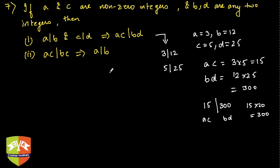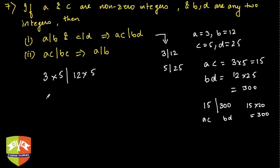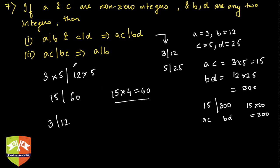For property 7.2, let's use the same example. ac is 15 and bc is 12 times 5, which is 60. So 3 times 5 divides 12 times 5 — that is, 15 divides 60 — because 15 times 4 is 60. Hence we also see that 3 divides 12, which is true. So both properties seem to be valid.